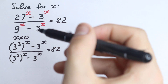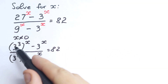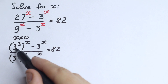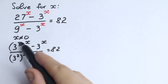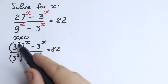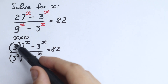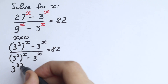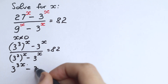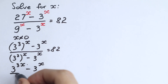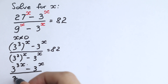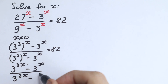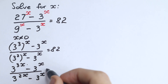Now we need a key rule: if we have something like 8 to the power x raised to the power y, we multiply the exponents to get 8 to the power x times y. Applying this, we get 3 to the power 3x, minus 3 to the power x, all over 3 to the power 2x, minus 3 to the power x, equal to 82.